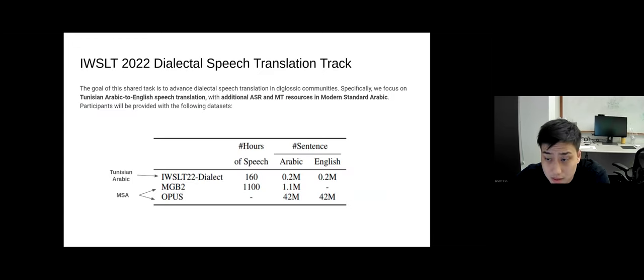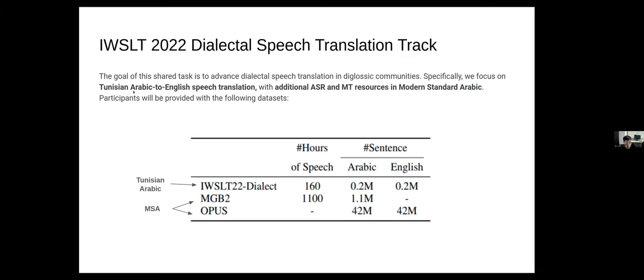The particular task this year that we've participated in is a Tunisian Arabic to English translation task with a decent amount, 160 hours of triplet ST data, with additional paired ASR and MT resources in modern standard Arabic, which is a similar language, but these can be considered two different dialects.